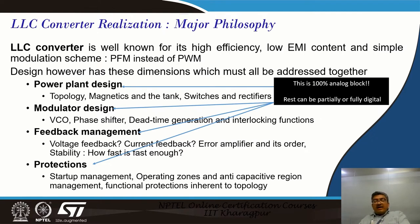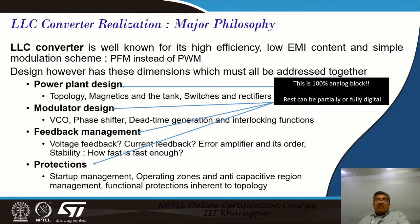We must also provide interlocking functions to prevent accidental turn-on of wrong MOSFETs. In the full bridge case only the diagonal MOSFETs should conduct; in the half bridge case only the top and the bottom MOSFET should conduct one at a time. These interlocking functions are meant to prevent catastrophic failures.